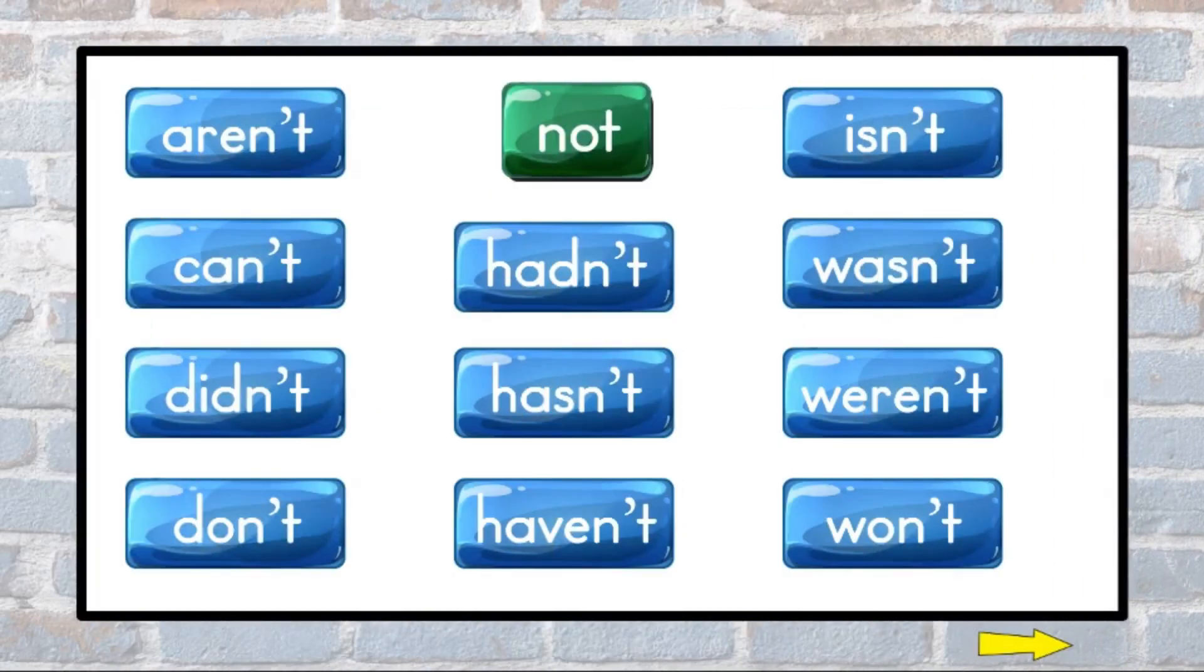Contractions with the word not also end with the letters N-T blended. Remember the apostrophe shows that the letter O from the word not has been removed and is not read. Review these contractions. Try to read them.